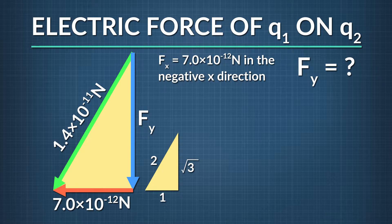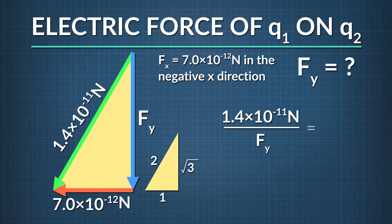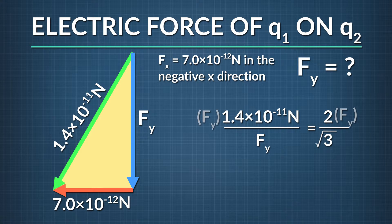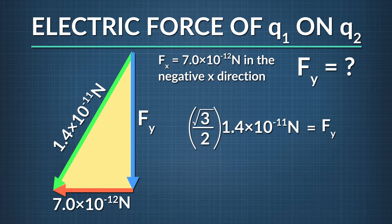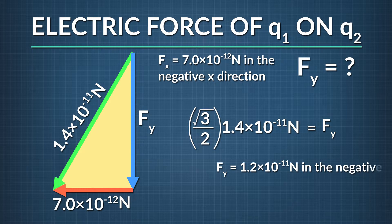Now let's solve for f sub y a similar way using a ratio. Going back to our similar triangles, the total electric force of q1 on q2 divided by f sub y equals 2 divided by the square root of 3. To solve for f sub y, first we multiply both sides by f sub y, then multiply both sides by the square root of 3 divided by 2. The force of q1 on q2 in the negative y direction equals 1.4 times 10 to the negative eleventh times the square root of 3 over 2, which equals 1.2 times 10 to the negative eleventh newtons in the negative y direction.